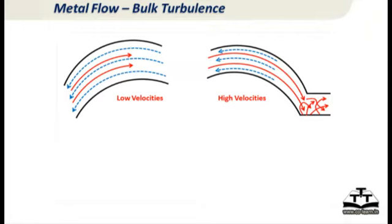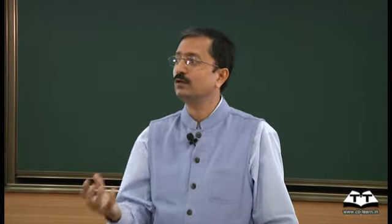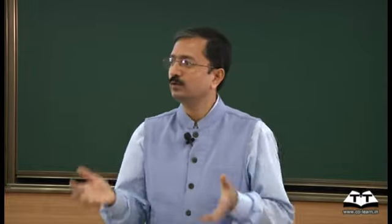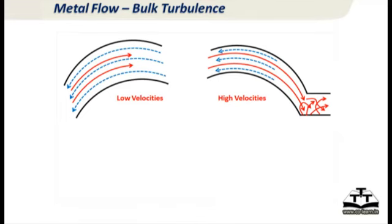Let us look at something called turbulence. The red line represents metal flow and the blue lines represent resistance to flow. Where does resistance come from as metal flows in the mold cavity? The mold wall itself provides friction, and inside the metal you also have viscosity. Viscosity acts as its own enemy to prevent the flow of metal in the mold cavity. We have two situations: low velocities and high velocities.